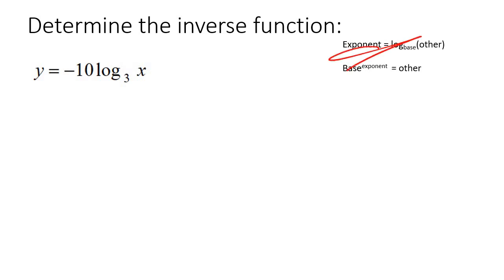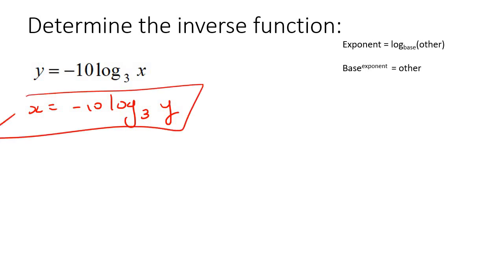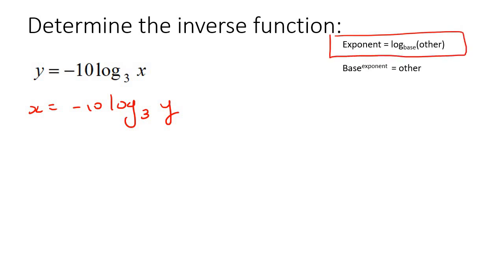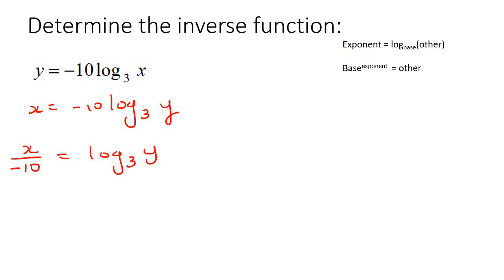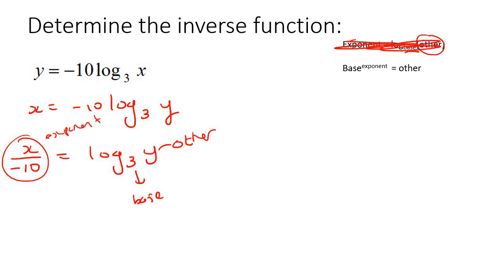Step one: first switch x and y around - that is step one for doing inverse. Now we've got a log equation, so it needs to look like our template. But at the moment there's a minus 10 in front, so first divide by minus 10. Now everything looks like our template. Go label everything: the thing next to the log is your base, this part is 'other,' and this part is the exponent. Scratch that out and rewrite it using the formula: base goes first, then exponent which is x over negative 10, then the other which is y. And you've just got y by itself.